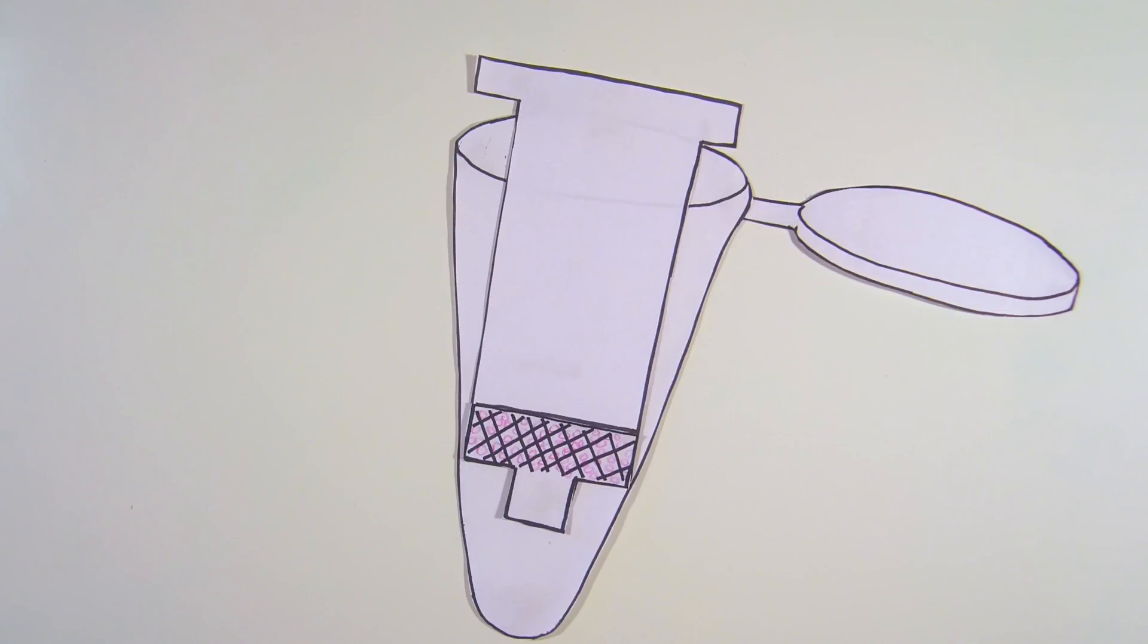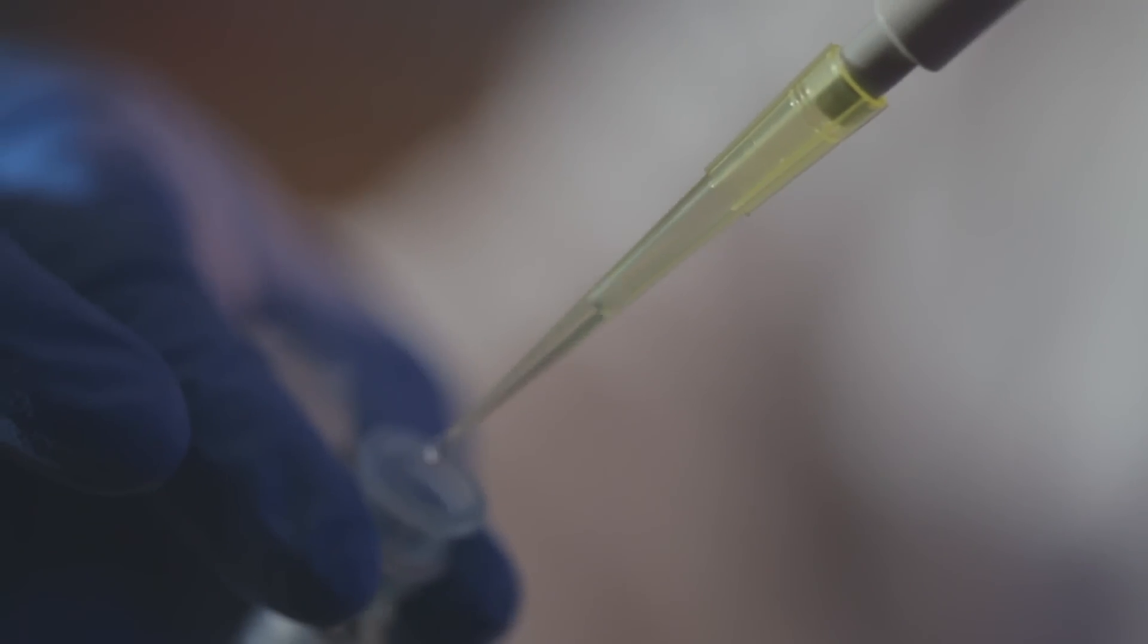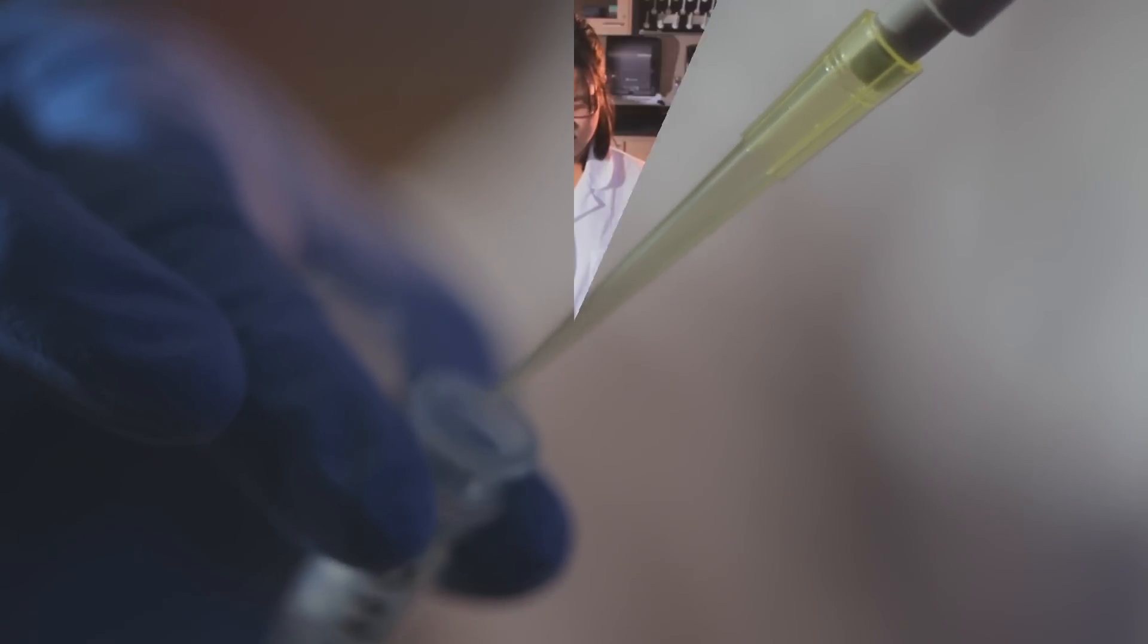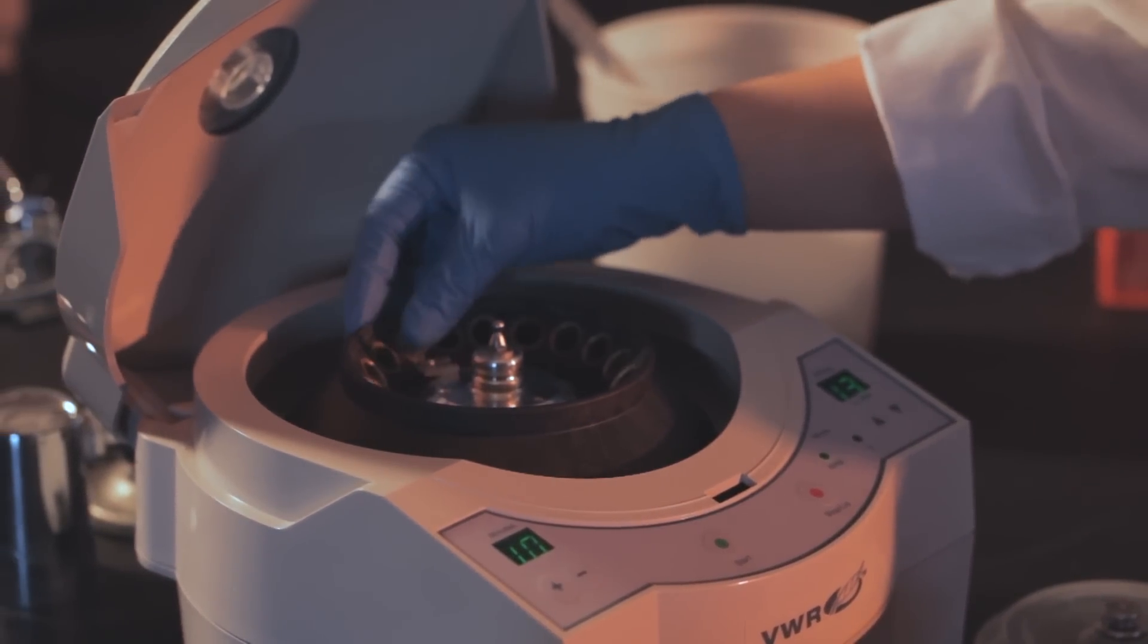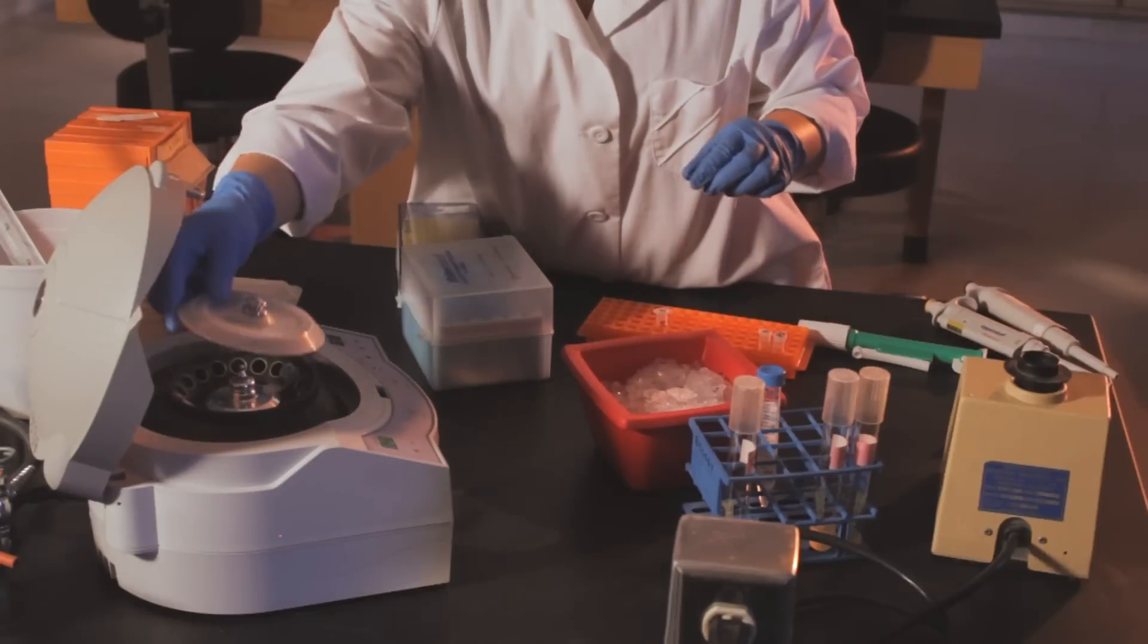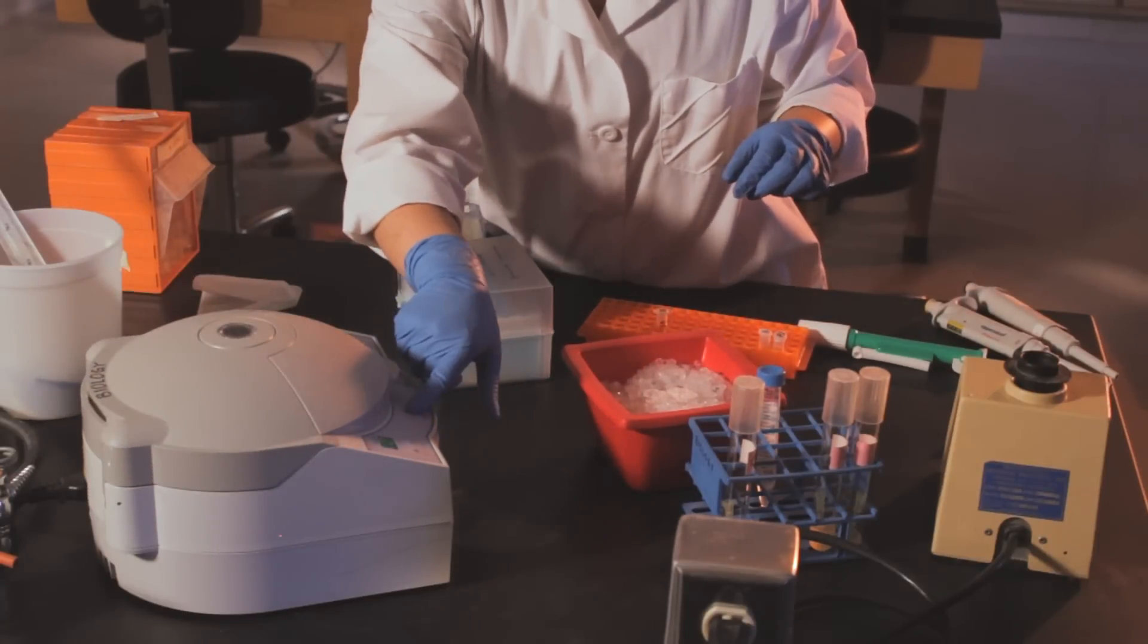Add 50 microliters of elution buffer directly to the membrane in the spin column. Let the spin column stand one minute while the DNA becomes solubilized. Then, centrifuge the column and tube for one minute. The microfuge tube caps will not close, so be sure that the caps are facing toward the center of the centrifuge so that they do not break off while spinning.